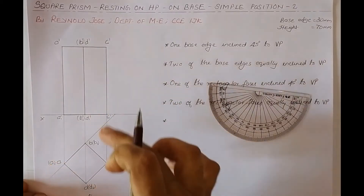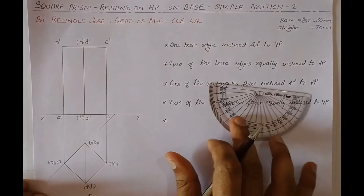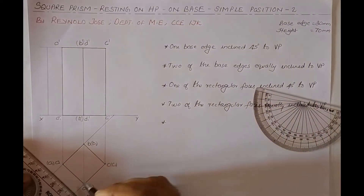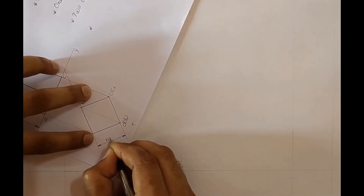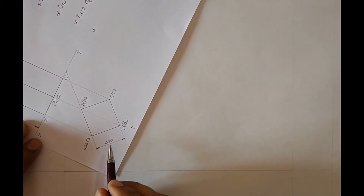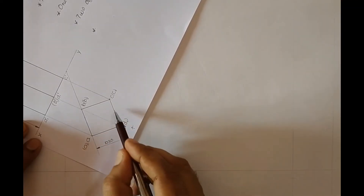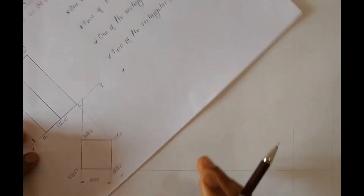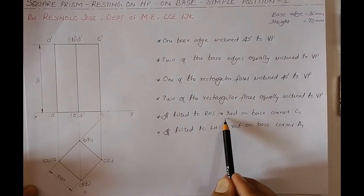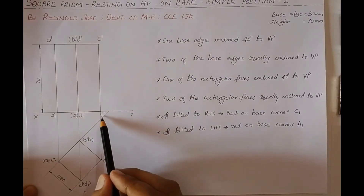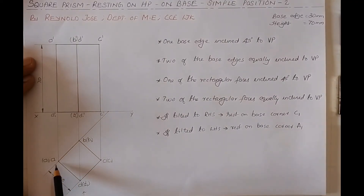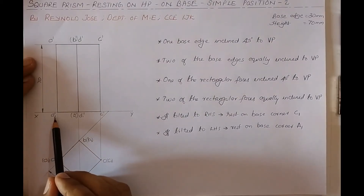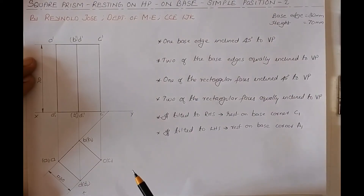This is the simple front view and top view of the solid. For dimensioning, we write 'Square 30' because all sides of the top view are equal. If the solid is tilted to the right it will rest on base corner C1, and if tilted to the left it will rest on base corner A1. This completes the simple front view and top view.